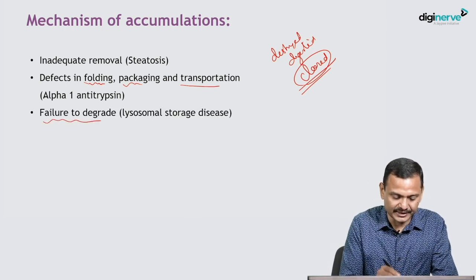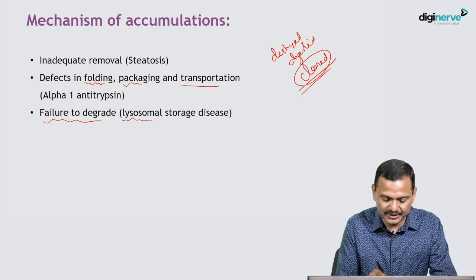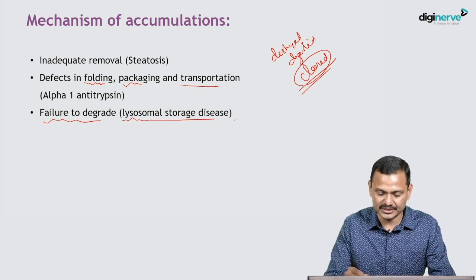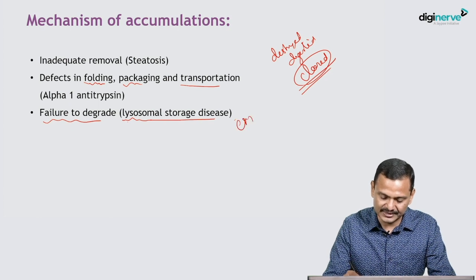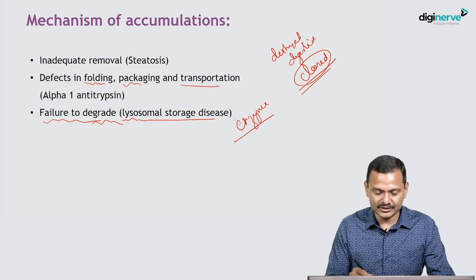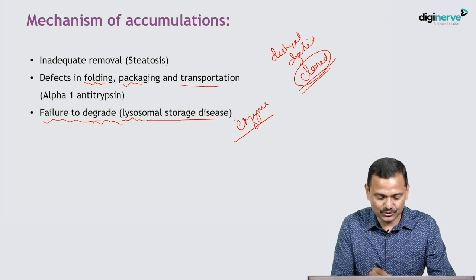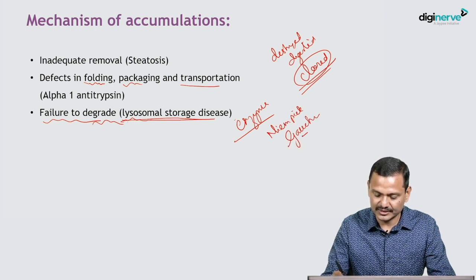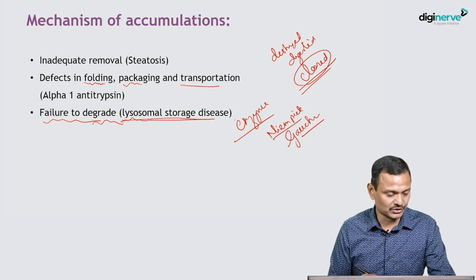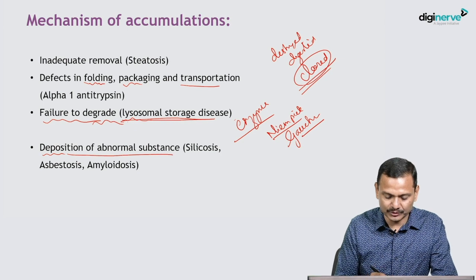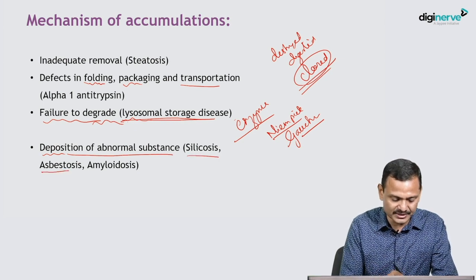Failure to degrade is another mechanism, such as in lysosomal storage disease. In lysosomal storage disease, due to deficiency of certain enzymes, these substances will not be degraded and will be stored in the lysosome. Examples include Niemann-Pick disease and Gaucher's disease. Then there is deposition of abnormal substances like silicosis, asbestosis, and amyloidosis — silicosis and asbestosis being two occupational health-related diseases.